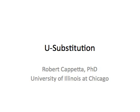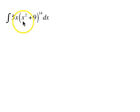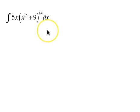This is Bob Capetta from the University of Illinois at Chicago, and this lesson is on u-substitution. We are looking for the antiderivative or integral of 5x times x squared plus 9 to the 14th.